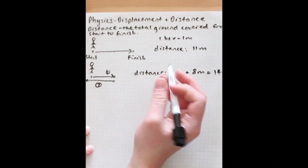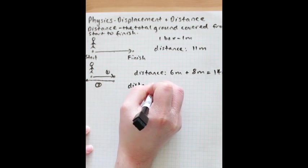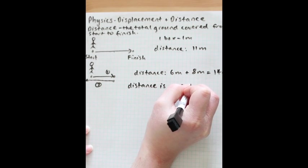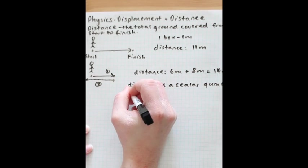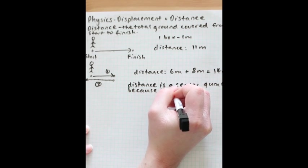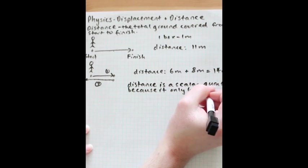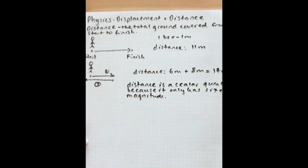In physics, we say that distance is a scalar quantity because it only has size or magnitude. So we say fourteen meters or eleven meters — we don't make any mention of any direction. That's why we call it scalar.